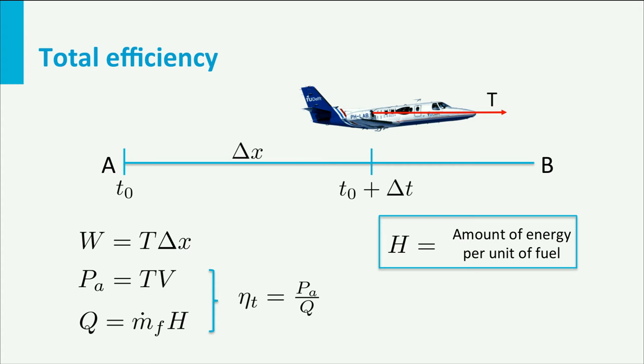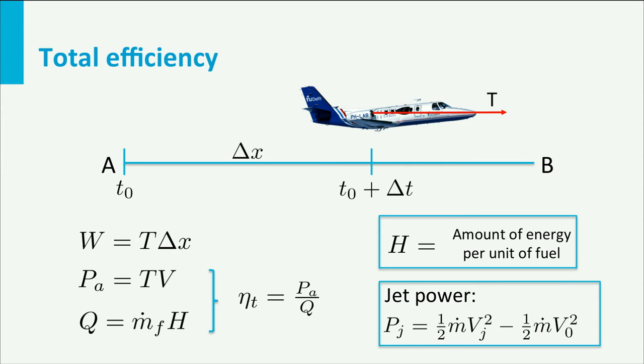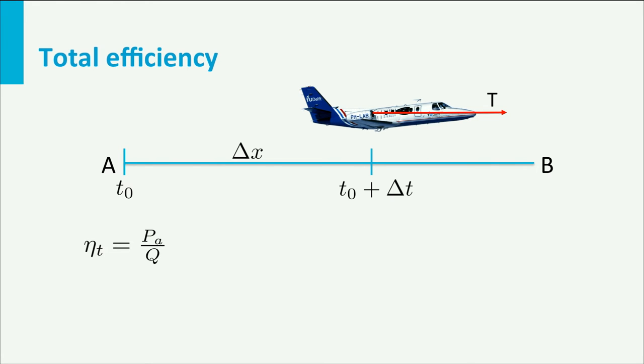The increase in kinetic energy of the flow per second is what we call jet power. It is the kinetic energy rate behind the engine minus the kinetic energy rate in front of the engine. If we look back at the total efficiency equation, we can also express it as power available divided by thermal power multiplied with jet power divided by jet power. This is a little trick in order to separate different energy losses and to get more insight into the physics behind the process.